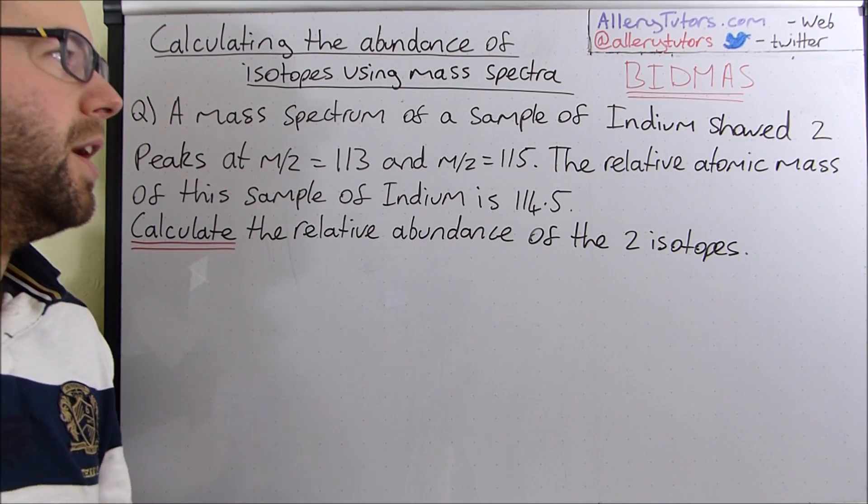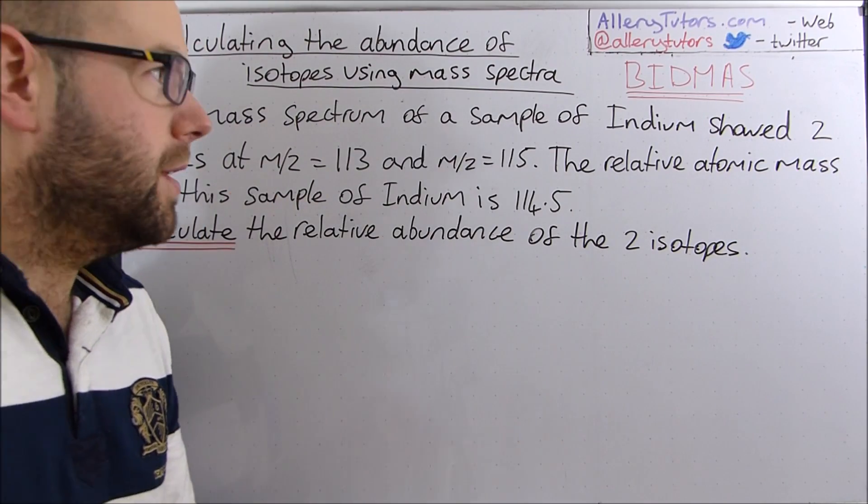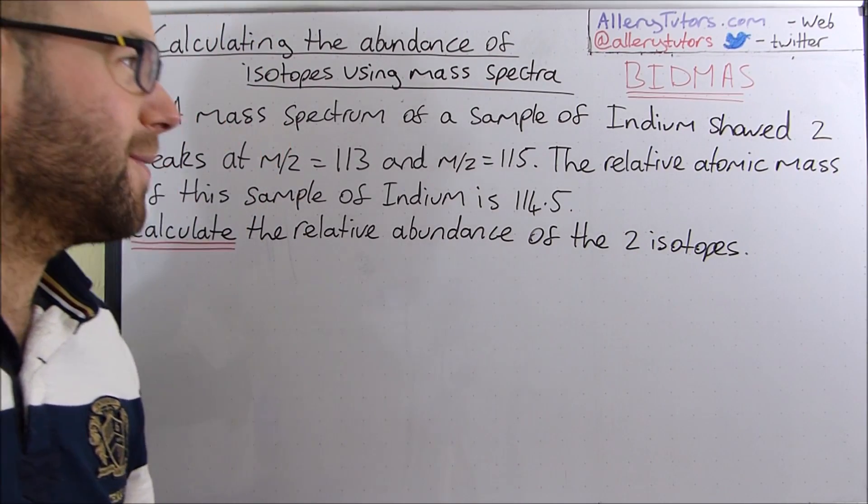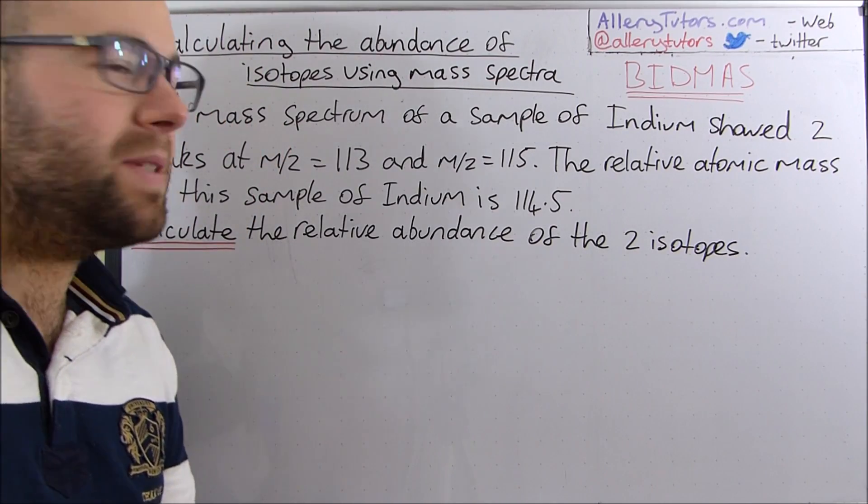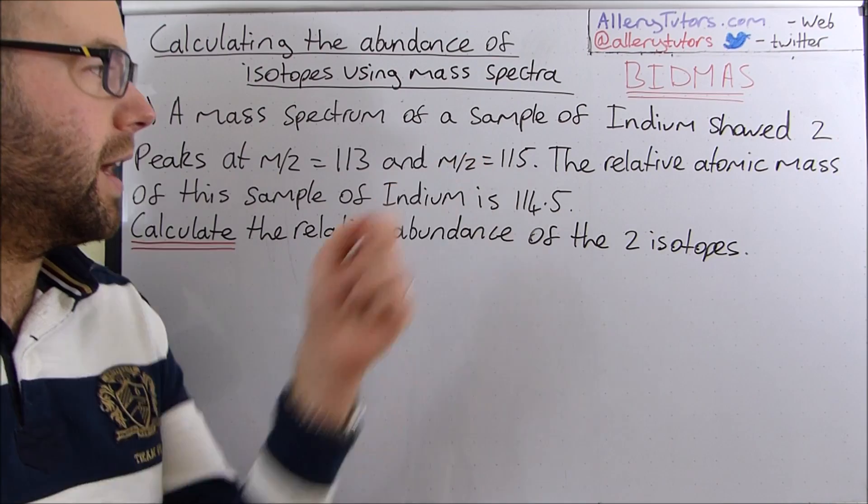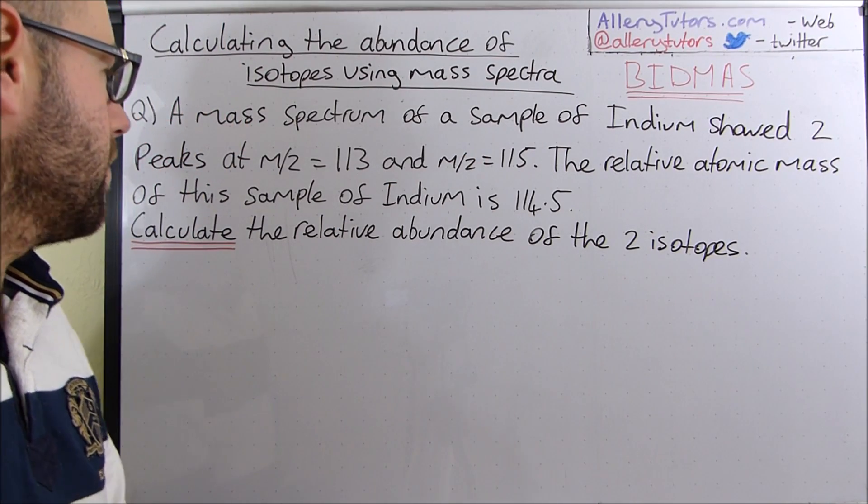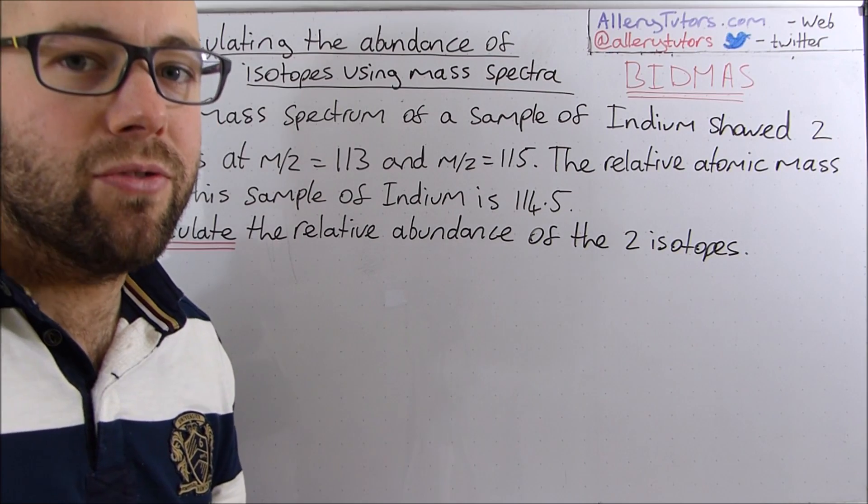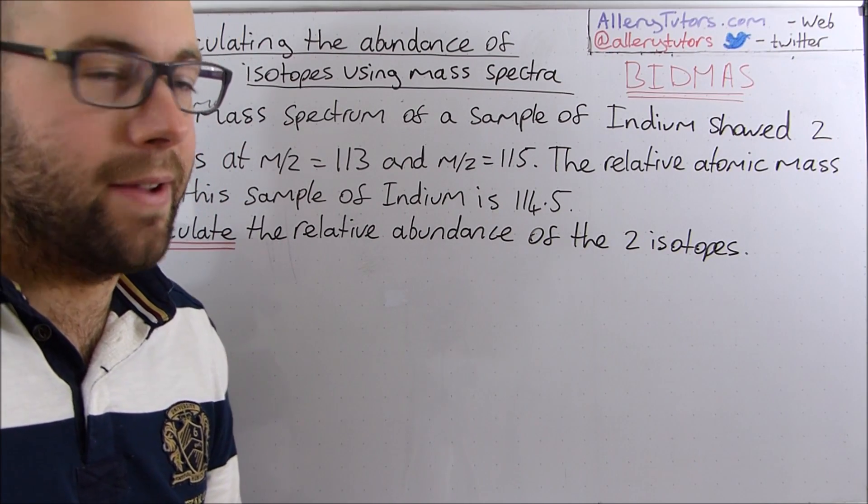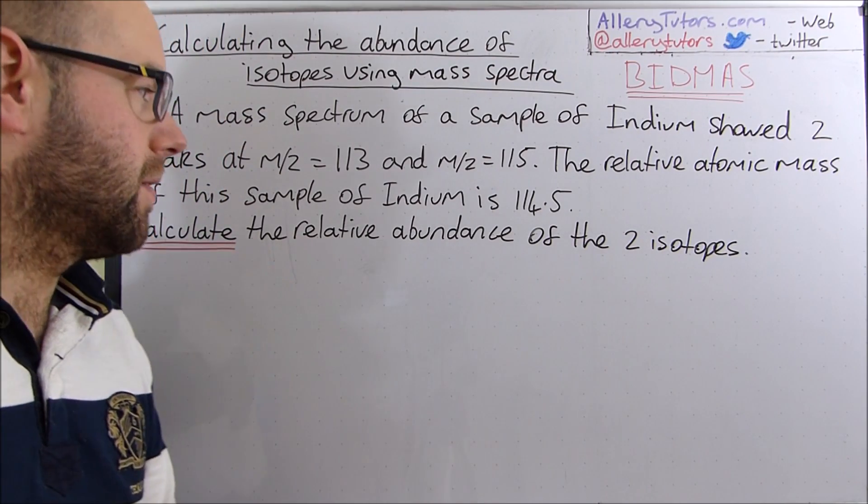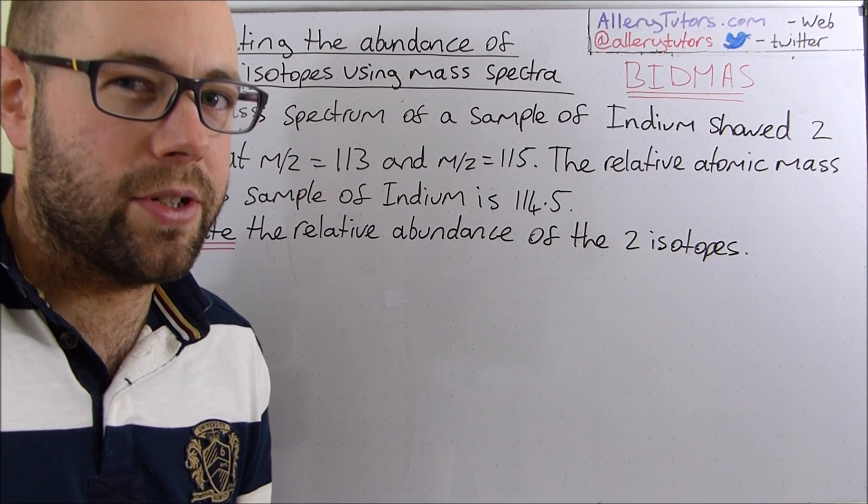A mass spectrum of a sample of indium, probably never heard of that one before, shows two peaks at MZ=113 and MZ=115. The relative atomic mass of this sample of indium is 114.5. Calculate the relative abundance of the two isotopes.